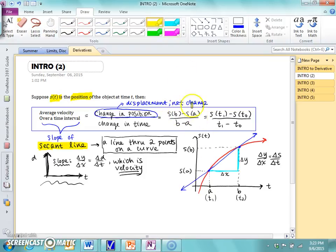Now, write this down here. Change in position is s of b minus s of a over b minus a, which is equivalent to s of t sub 1 minus s of t sub 0 over t1 minus t0. This is from here. So draw this coordinate plane down very carefully here.